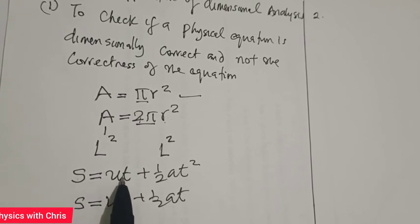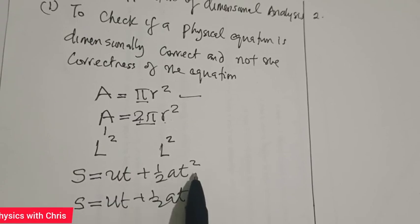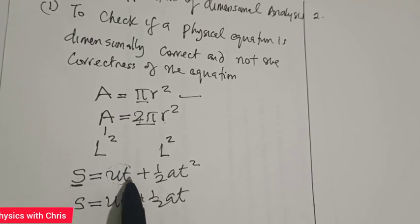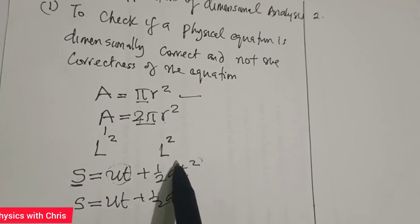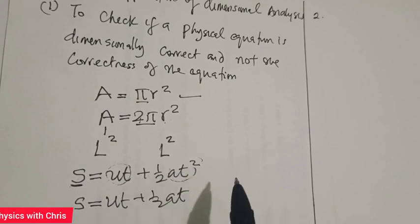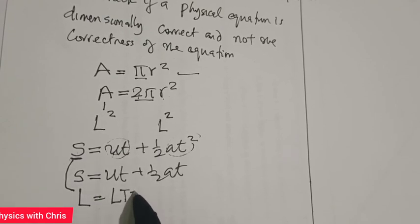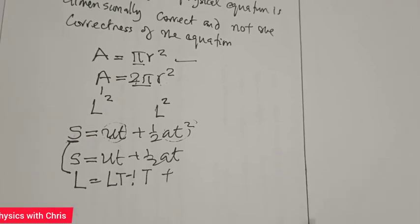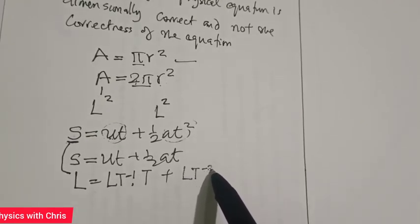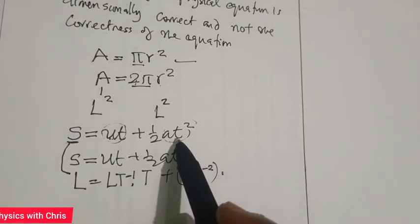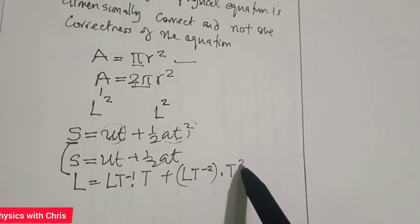For s to equal ut plus half times acceleration times t², the dimension of displacement or distance must be the same as the dimension of the product of u and t, and also the same as the dimension of at². The dimension of displacement is L. The dimension of initial velocity is LT⁻¹, multiplied by the dimension of time T, plus the dimension of acceleration LT⁻², multiplied by the dimension of time squared T².